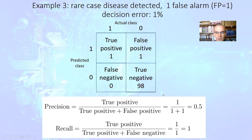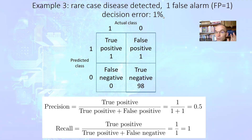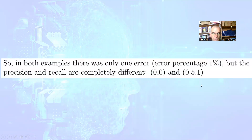To the contrary, let us consider the next example. The classification error is also 1%, but in this case we detect the rare disease for the one patient out of 100 who has it. However, we also have one false alarm — we predict the presence of disease for a patient who did not have it. Filling the confusion matrix with values 1, 1, 0, and 98, 99, we calculate precision as one half — 0.5 — and perfect recall equal to 1. You can see that although both algorithms had a classification error of just 1%, their precision and recall are completely different: 0, 0 for the previous example, and 0.5 and 1 for this example.